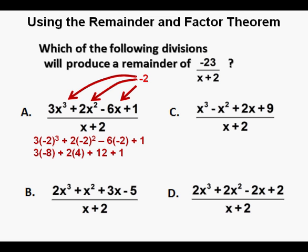In simplifying, this would be 3 times negative 8 plus 2 times 4 plus 12 plus 1, and that's negative 24 plus 8 plus 13, which equals negative 3. And since we need a remainder of negative 23, A is not our correct answer, so we cross off A.